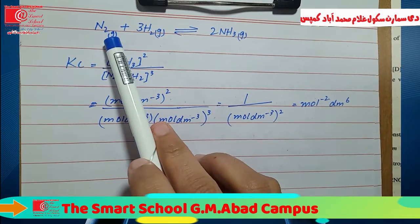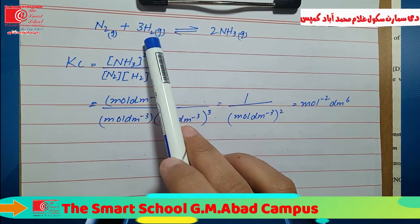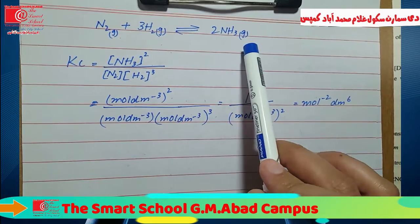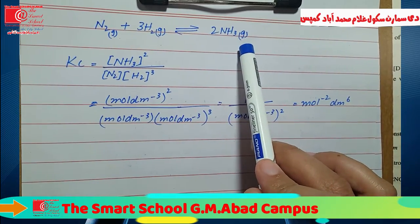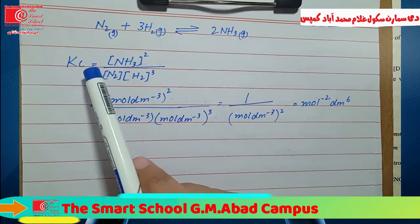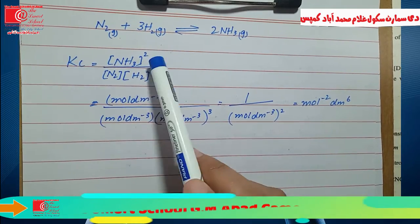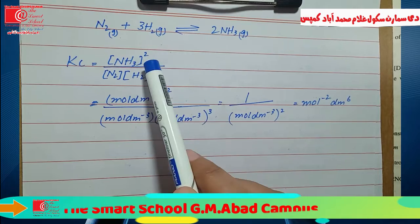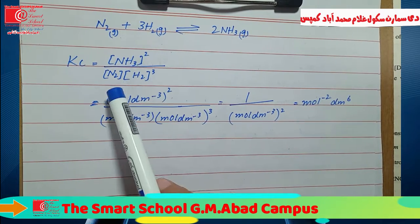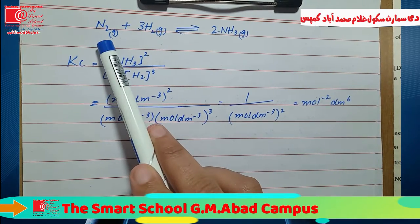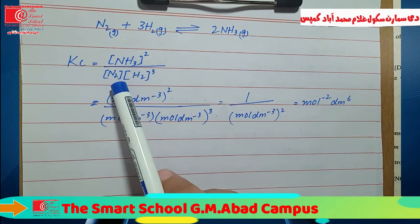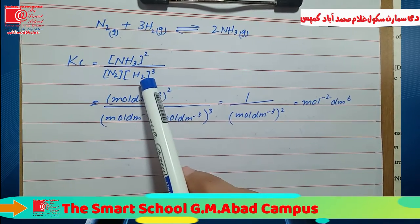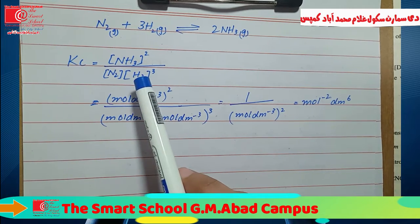The second example is: N₂(g) + 3H₂(g) ⇌ 2NH₃(g). The product NH₃ has a coefficient of 2 — that becomes the power in the numerator. In the denominator, we place the reactants N₂ and H₂. Nitrogen has a coefficient of 1 and hydrogen has a coefficient of 3, so hydrogen is raised to the power of 3.